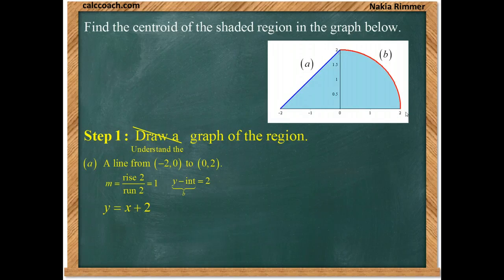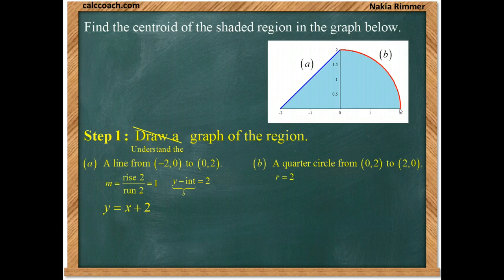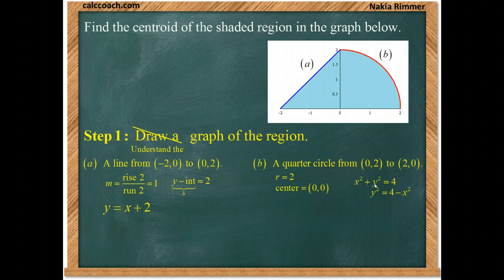Now let's move to this quarter circle. The full circle has a radius of 2, and the center is the origin. A circle centered at the origin with a radius of 2 has the equation x squared plus y squared equals 4. We solve for y by subtracting x squared and taking the positive square root. We want the line from negative 2 to 0 and the quarter circle from 0 to 2.